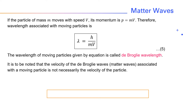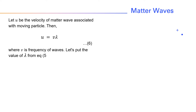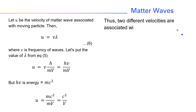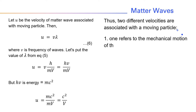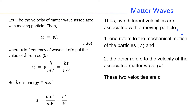This means these two velocities are different. Let u be the velocity of matter wave associated with a moving particle. Then u = νλ (equation 6), where ν is the frequency of the wave. Substituting the value of λ from equation 5, u = νh/mv = hν/mv. But hν is energy, which equals mc². Therefore, u becomes mc²/mv, or c²/v. Thus, two different velocities are associated with a moving particle: one refers to the mechanical motion of the particle, v, and the other refers to the velocity of the associated matter wave, u. These two velocities are connected by this equation.